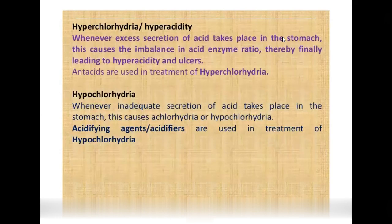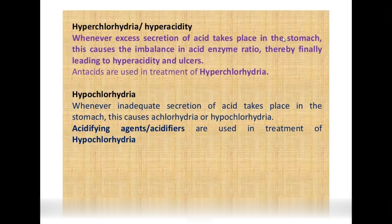Hyperchlorhydria means hyperacidity — excess secretion of acid in the stomach. This creates an imbalance in the acid and enzyme ratio, leading to hyperacidity ulcers. Antacids are used in the treatment of hyperchlorhydria to neutralize the hydrochloric acid produced.